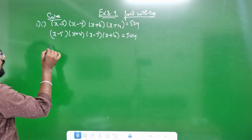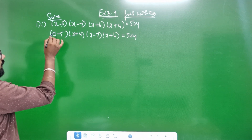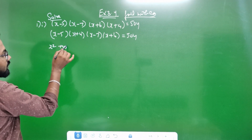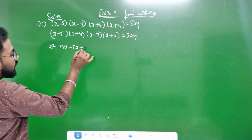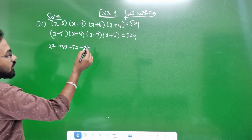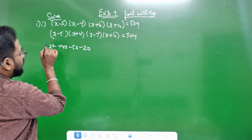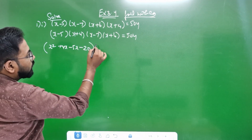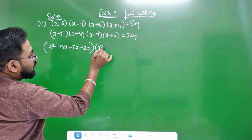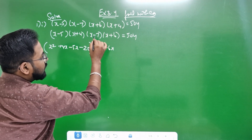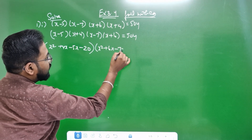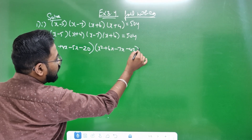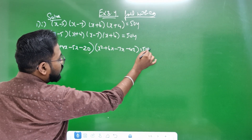Let's do this: x into x is x square. x into 4 is 4x. x into 5x, x into 20. We will put this bracket in the third. x square, x plus 6x, x minus 7x, minus 42. This is equal to 24. We will put this bracket in the third.